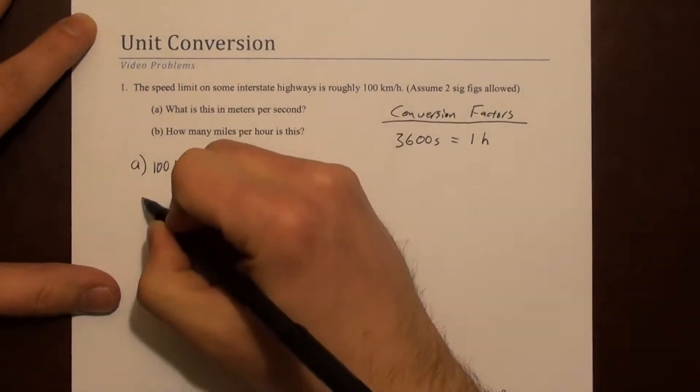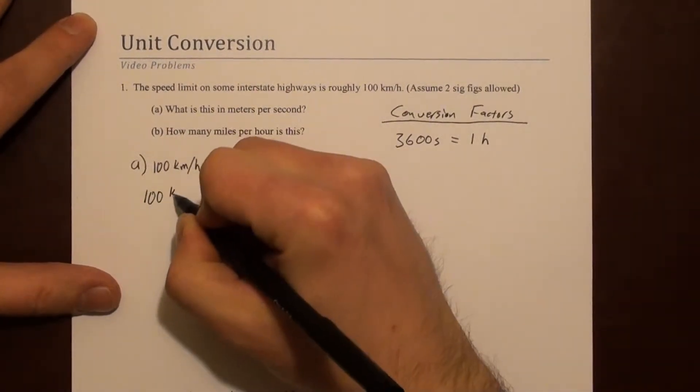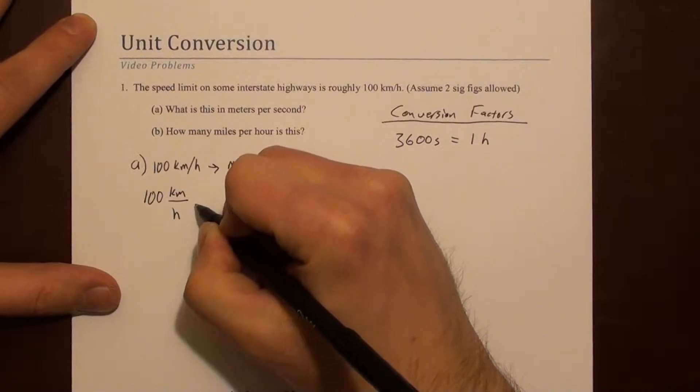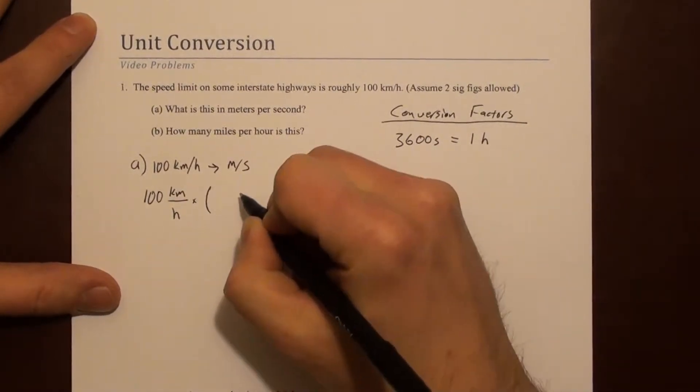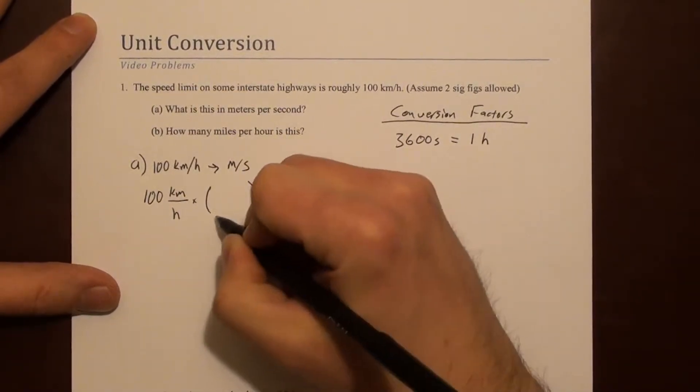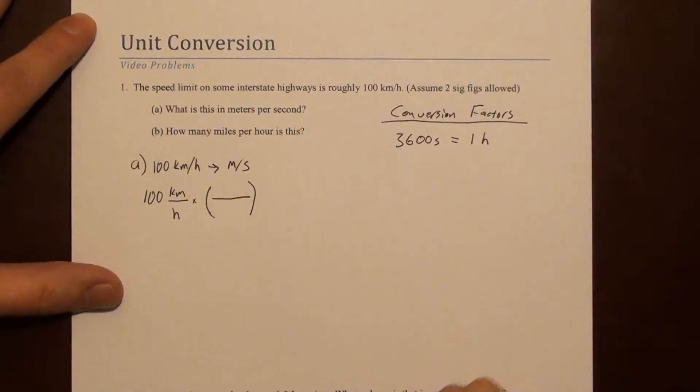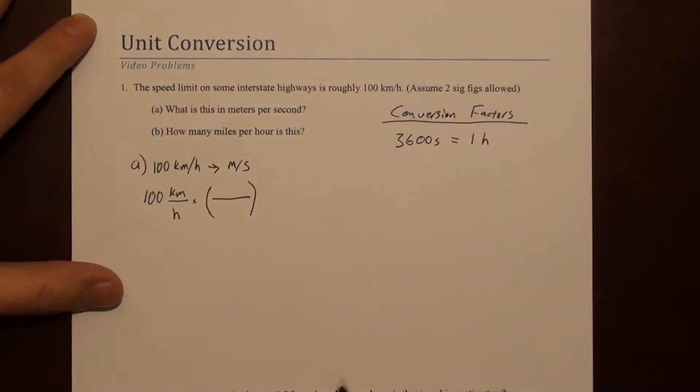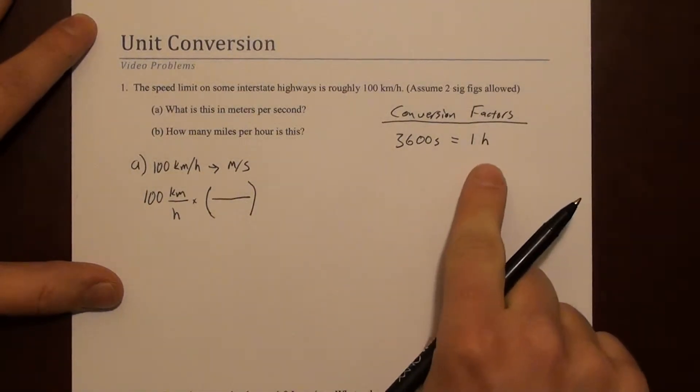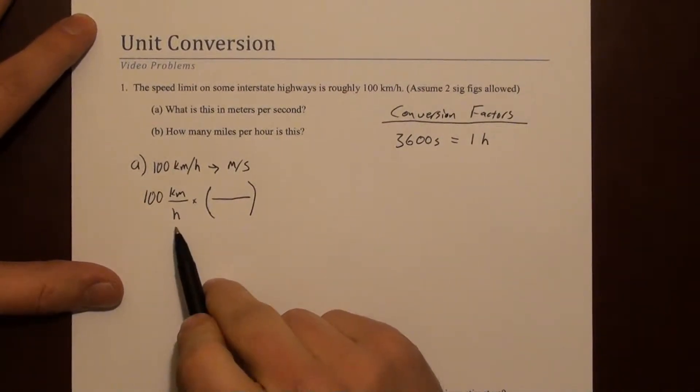Let's do 100 kilometers per hour and multiply by 1. We're filling in a fraction that is equal to 1, but it's a specific one. We're using the conversion factor to fill in this fraction. So we want hours to turn into seconds.